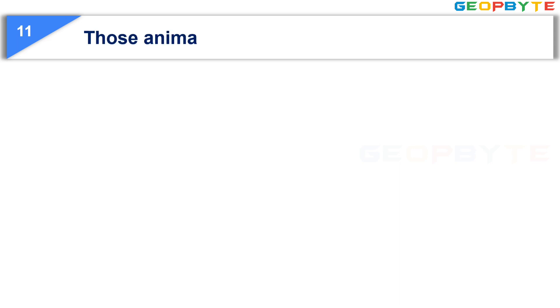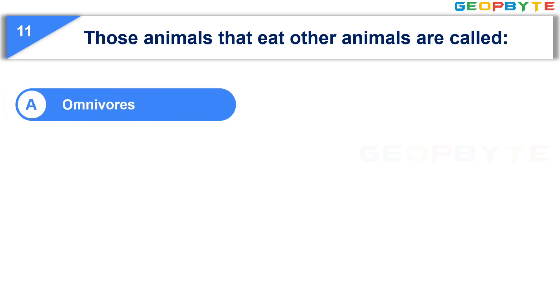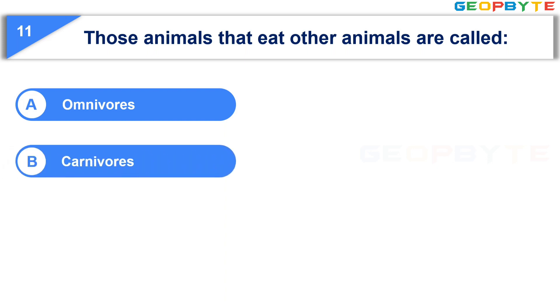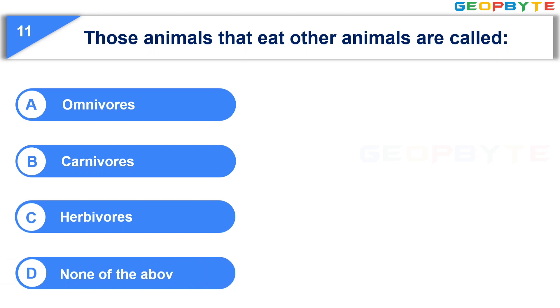The eleventh question is: Those animals that eat other animals are called. Option A, Omnivorous. Option B, Carnivorous. Option C, Herbivorous. Option D, None of these. Your time starts now.